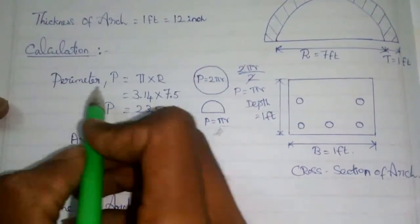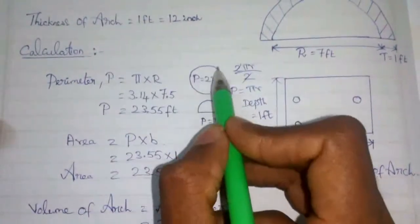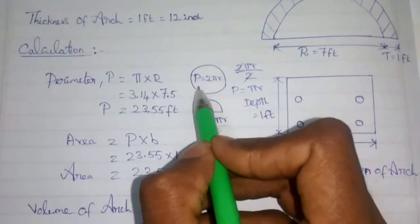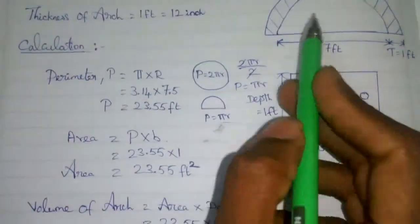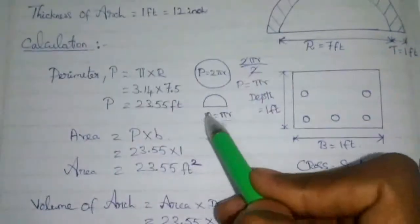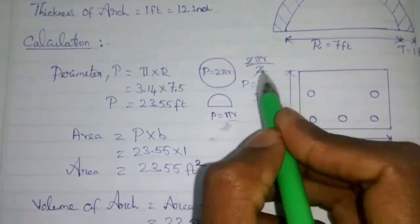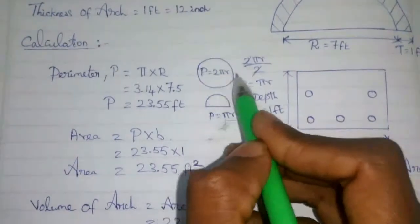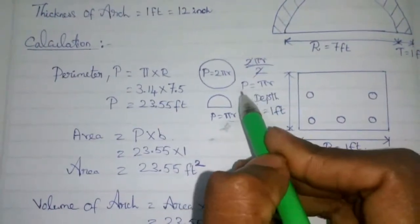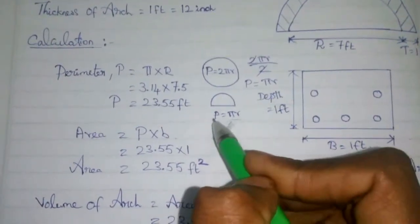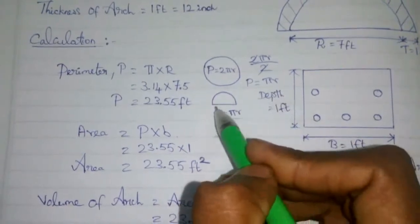Let's look at the perimeter. The perimeter of a full circle is 2πr. Since the arch is a half circle, we divide by 2: 2πr divided by 2, the 2 cancels. So the perimeter of a half circle is πr.